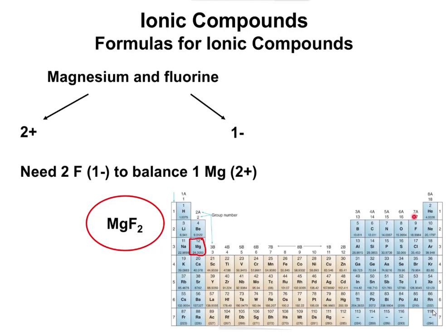Fluorine is a halogen on the periodic table, meaning it's going to have a negative one charge. You can calculate this as eight minus the group number.